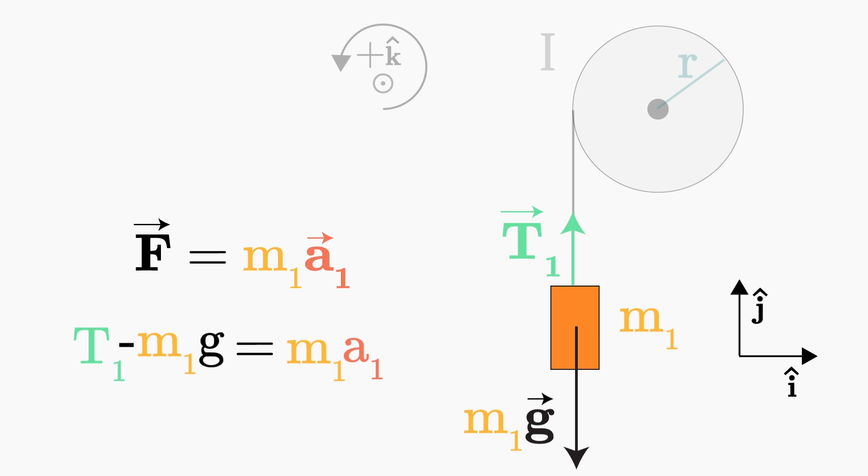Notice that here we've set the signs for tension and weight, but we don't yet know which way the block is accelerating. So we just start by writing m1a1, and if in the end we get that a1 is negative, we'll know that it's actually accelerating in the negative direction.